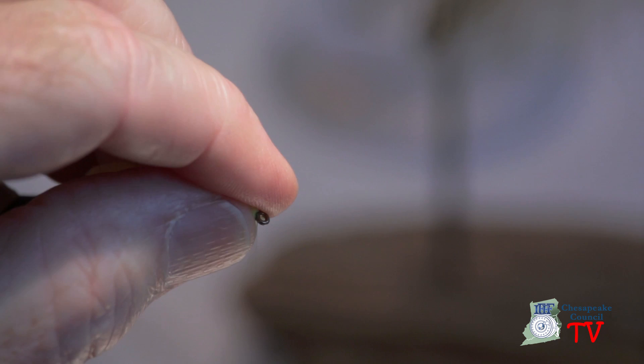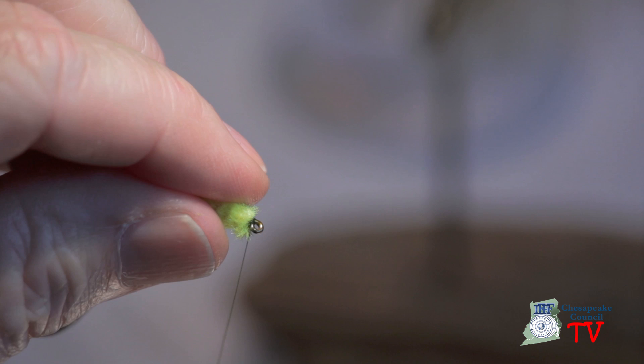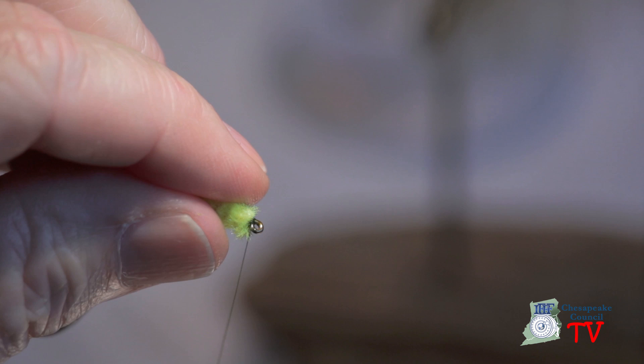Take that off. Put a little head cement on it. Take a needle. Clean the eye of the hook out. Like that. And just take this. And there's a green weenie. Right there. Works very well on a whole variety of fish.